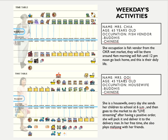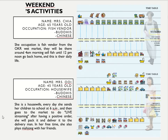The second user is the housewife. Every day she sends her children to school at 6 am, then goes to the market to do live streaming. After receiving orders, she packs and delivers them to the delivery man. In her free time, she also plays Mahjong with her friends. These are the weekend activities.